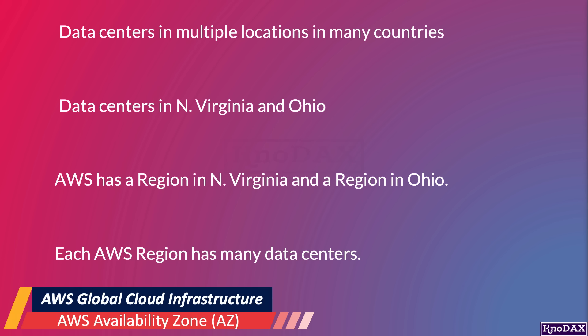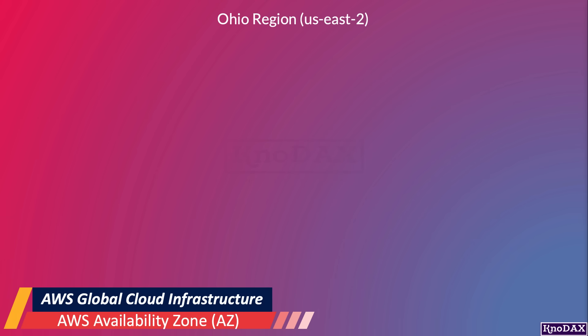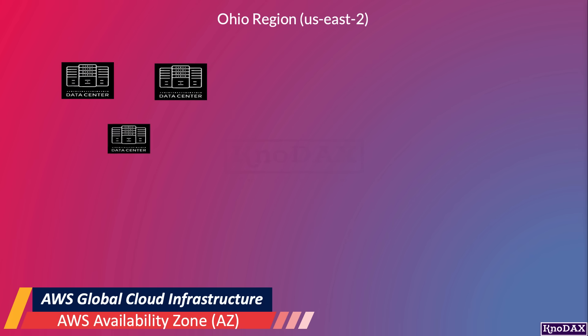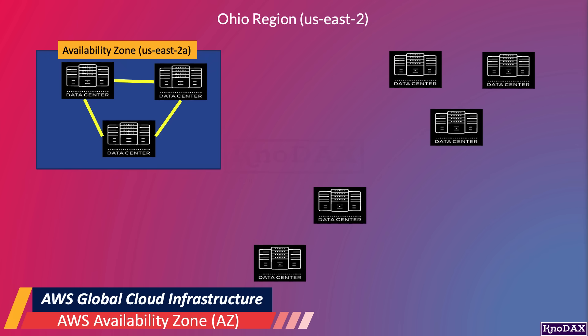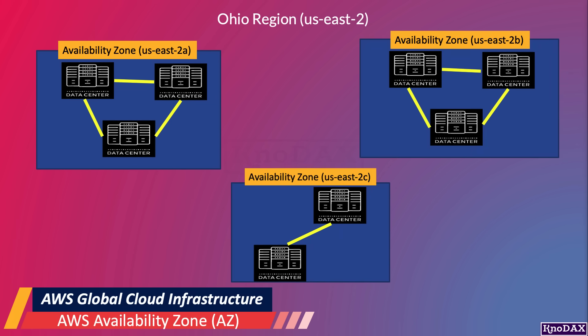The general concept is that each AWS region has many data centers. Let's take the AWS Ohio region as an example to understand Availability Zones. Each AWS region has many data centers. Data centers that are near one another are considered to be part of one cluster. The Ohio region has three clusters of data centers. Each cluster is called an AWS Availability Zone, or AZ.